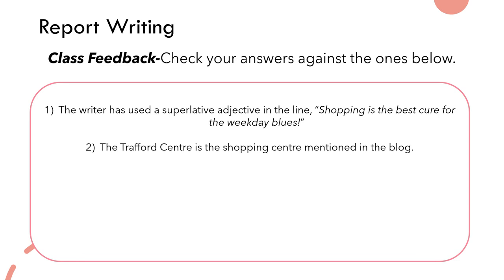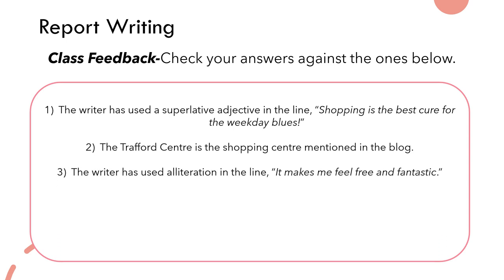Number two: the Trafford Centre is the shopping centre mentioned in the blog. Number three: the writer has used alliteration in the line 'it makes me feel free and fantastic.' Alliteration is where you repeat the same letter more than once, and you can see there we actually have three examples of F: 'feel,' 'free,' and 'fantastic.' Even though it's separated by the word 'and,' it still counts as alliteration — it doesn't have to be three words with the same letter.